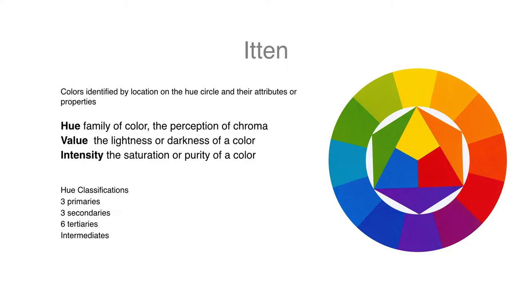We know that with Itten that he identified colors based on location on a hue circle and also via their attributes or properties. So he identified within each color, it belongs to a hue family, it has a certain degree of lightness or darkness,